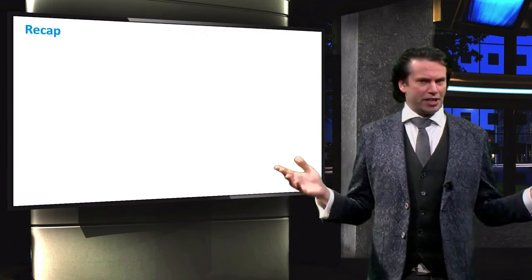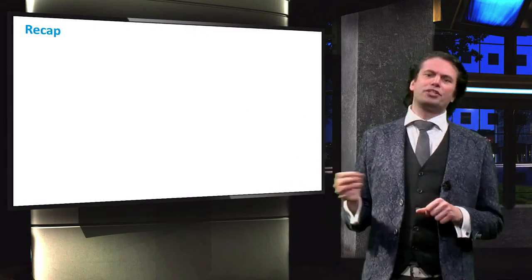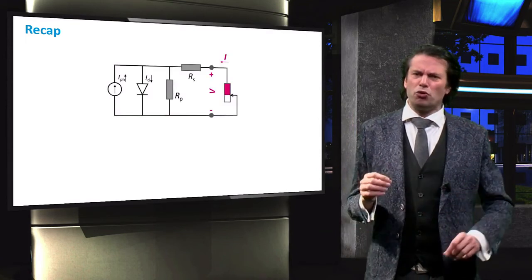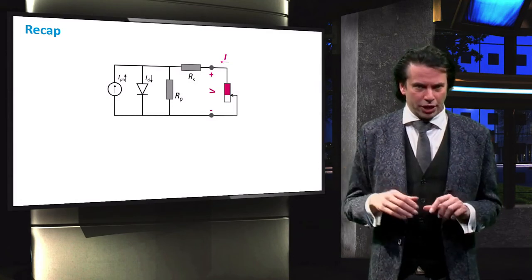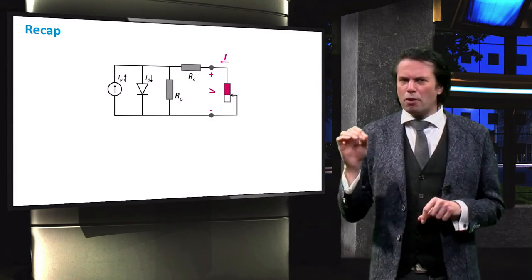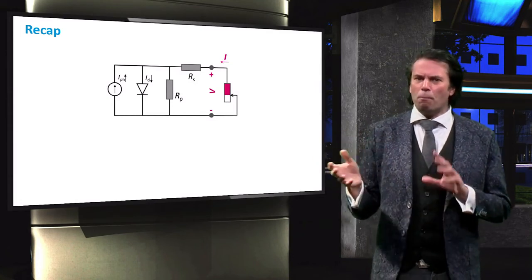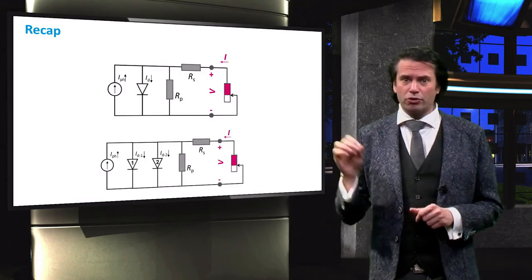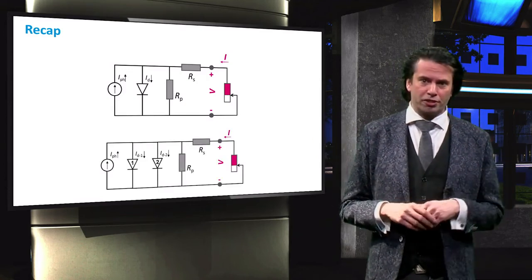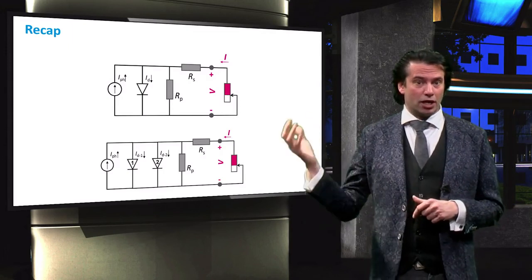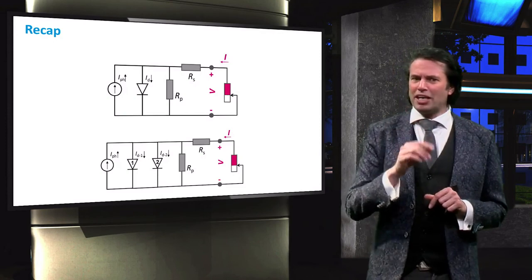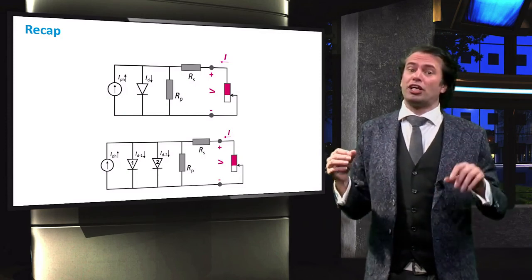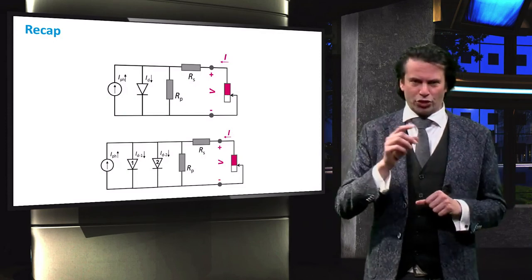So now let's recap. We first looked at the single diode model and showed all aspects of the equivalent circuit and resultant equations. Then we briefly took a look at the more complex two diode model, where one diode represents the dark diffusion current and the other represents the dark saturation current. Now you can simulate and understand how a solar cell will interact with an external circuit.